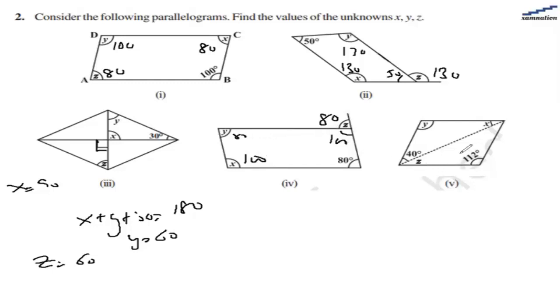In the fifth figure, we are given this angle as 40 and this angle as 112. That means y is equal to 112. And x is equal to 112 plus 40, that is 152. 180 minus 152 will be 28.